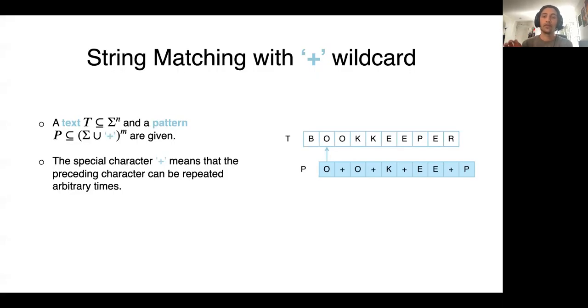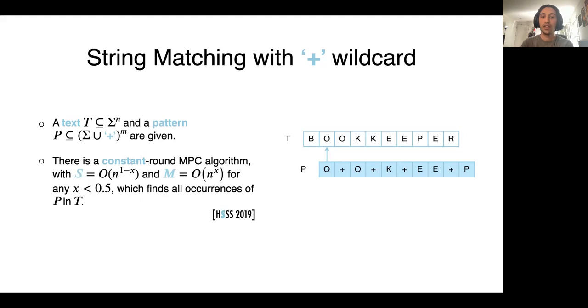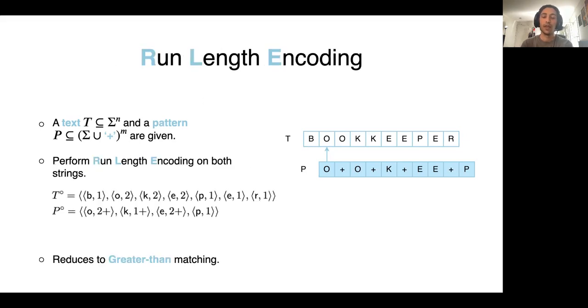In the case of plus wildcard character, when there is a plus in the pattern, the previous character can be repeated arbitrary number of times in the text. So for example, here we have a string P which has a plus wildcard, and we can see that there is a K+ here and there are two K's in text T that are matched with this K+ in the pattern.